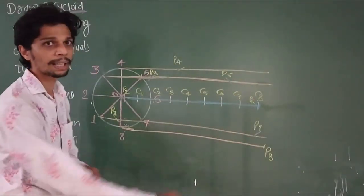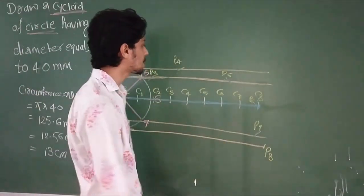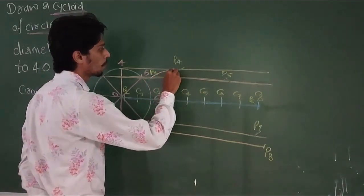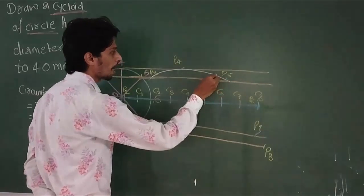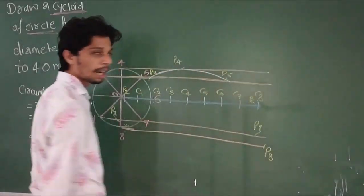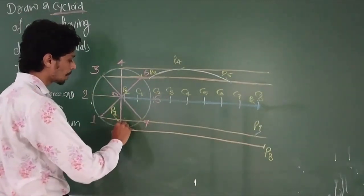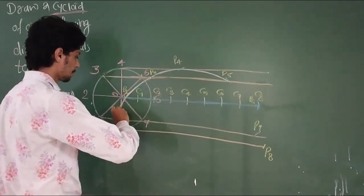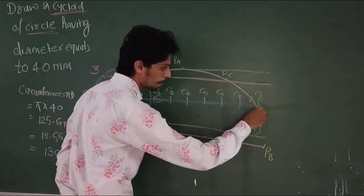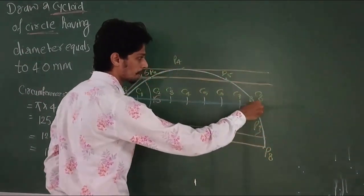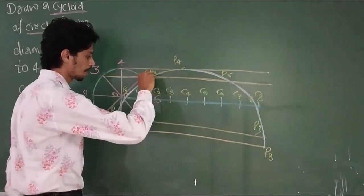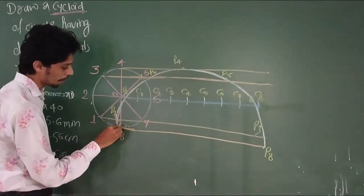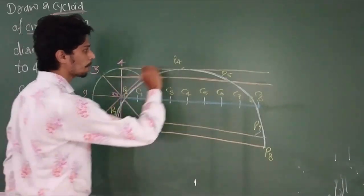So you see 1, 2, 3, 4, 5, 6, 7, 8 points. What do you do? You need to join these points by using a French curve. Join starting point through P1, P2, P3, P4, P5.